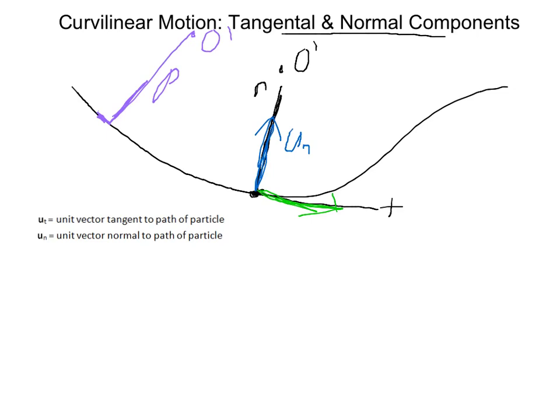Maybe right here we have a center of curvature for this, rho. Essentially, rho is the radius at that particular spot in time.